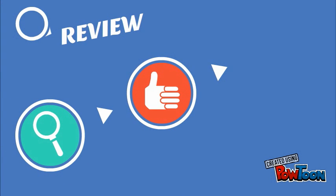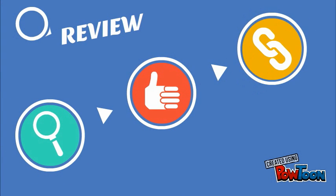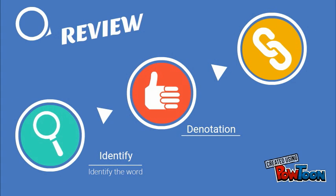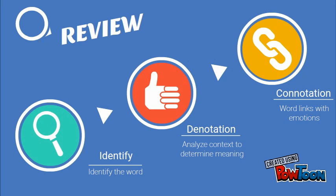Okay, let's review. The first step is to identify the word and what the word means, and then you can understand its different denotations. And each denotation has its own connotation that you can relate to each word.